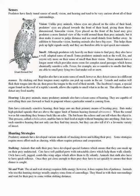Although predators rely heavily on their vision, they also have a well-adapted sense of smell. Some predatory animals such as the wolf, fox, and coyote rely more on their sense of smell than their vision, and have a longer snout which provides more room for complex nasal passages housing chemically sensitive cells. Foxes are so sensitive to smells that they can detect prey lying two feet under soil or snow. Reptiles also have an acute sense of smell, detected differently — by sticking out their tongues. The Jacobson's organ, found on the roof of a reptile's mouth, allows the reptile to smell what is in the air and detect any food nearby.